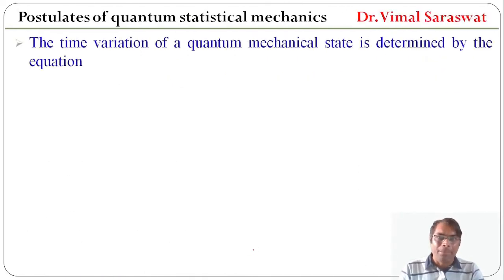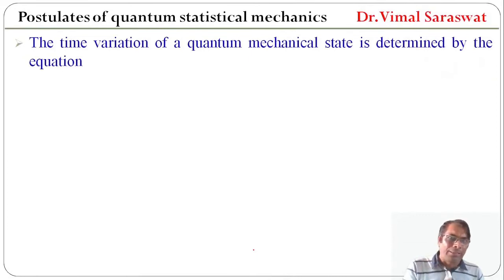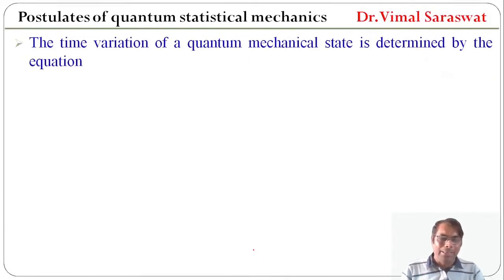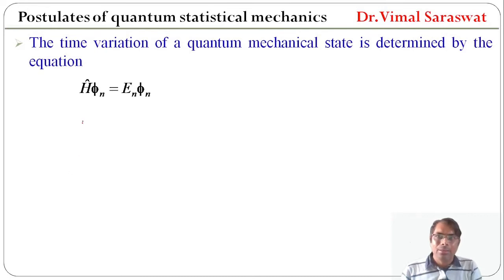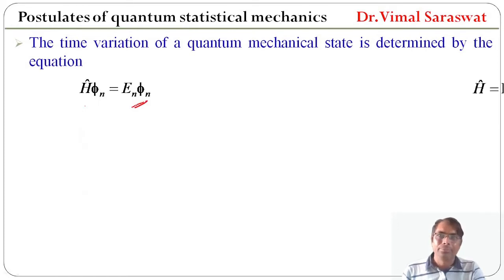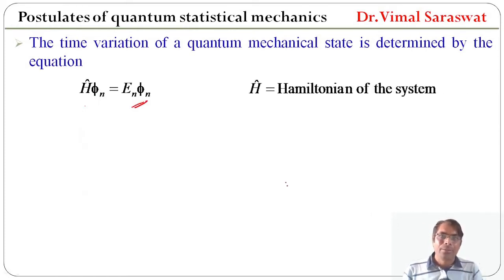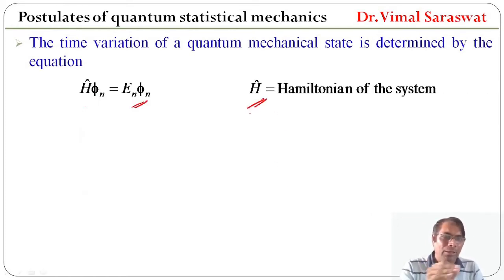The time variation of a quantum mechanical state is determined by the equation H|φ_n⟩ = E_n|φ_n⟩, where H is the Hamiltonian of the system.